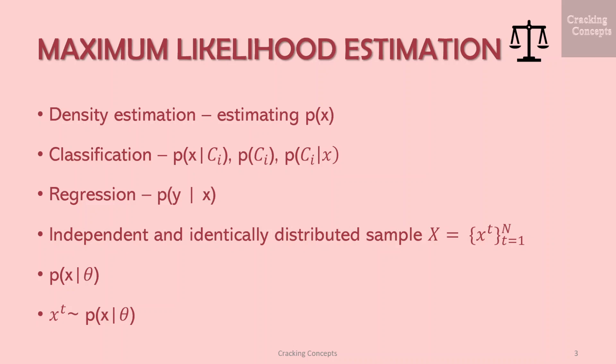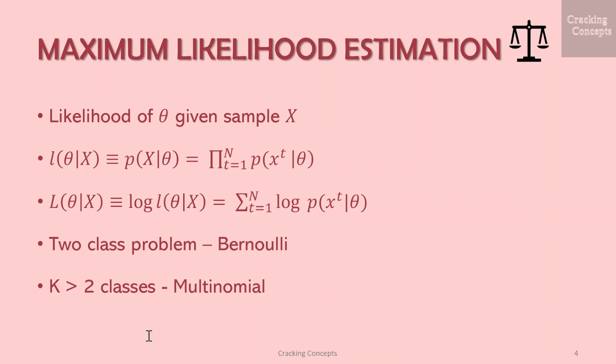Let us say we have an independent and identically distributed sample x, which is the set {x_t} where t varies from 1 to n. We assume that x_t are instances drawn from some known probability density family P, defined up to parameters θ. We want to find θ that makes sampling x_t from P as likely as possible.